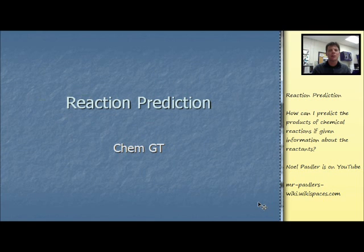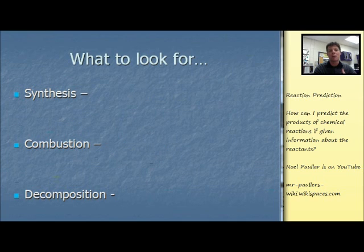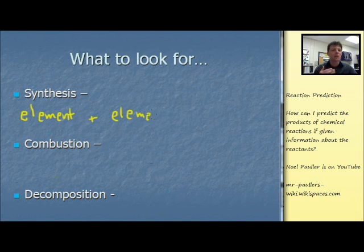First, what we want to do is look at each reaction type, and we're going to be considering what are things that we should be looking for that are going to help us determine what types of products are going to be formed in the different types of chemical reactions. So first let's take a look at synthesis reactions. For my students, the limitation for synthesis reactions will be that we're looking at the reaction of one element plus another element. So if you see element plus element in my class, that means it will be a synthesis reaction.